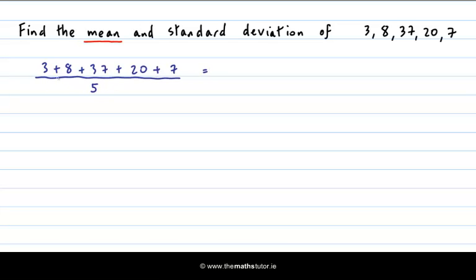Now we add them all up and 3 and 8 is 11 plus 37 is 48 plus 20 is 68 plus 7 is 75, and divide by 5 and that goes in 15 times. So our mean is 15.